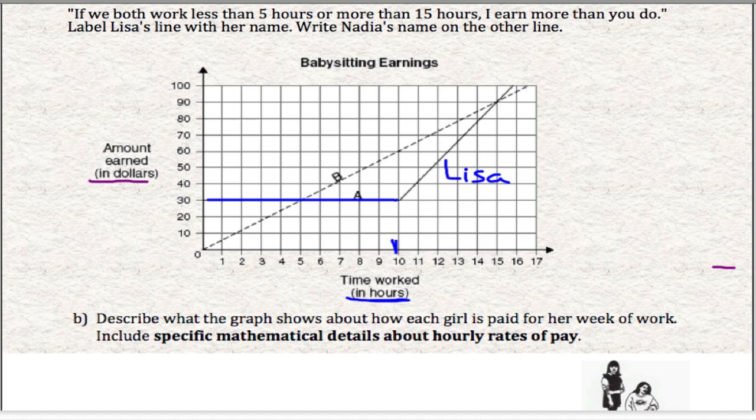And then from there on, Lisa charges a different amount per hour. So if we describe Lisa, she makes $30 for the first 10 hours.